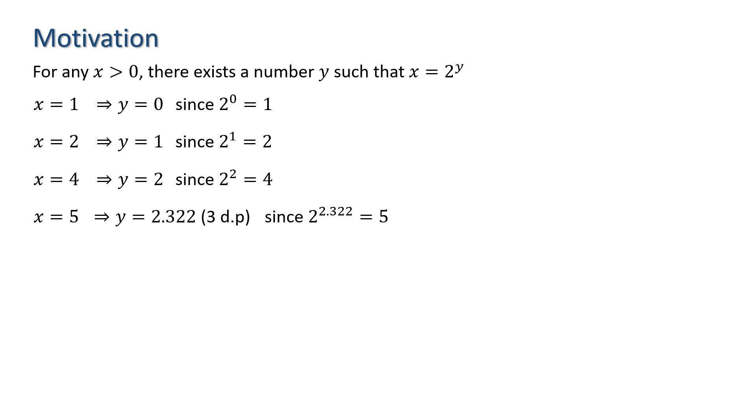We can do the same for numbers less than 1. Again, starting with powers of 2, if we look at x equals 1 half, we can see that y equals minus 1. And x equals 1 quarter gives y equals minus 2. Given the work already done for x equals 5, it's easy to see that x equals 1 fifth gives a y value of minus 2.322 to three decimal places.